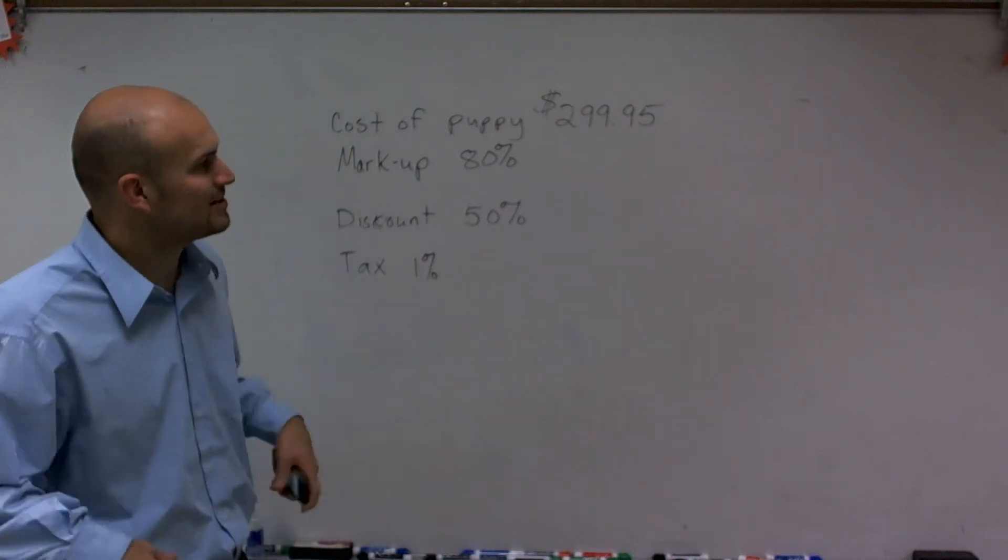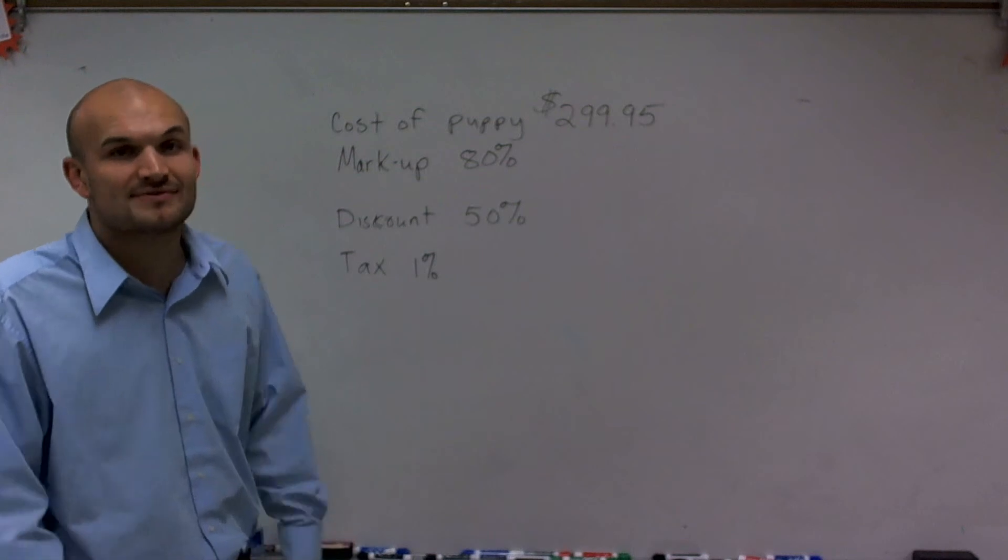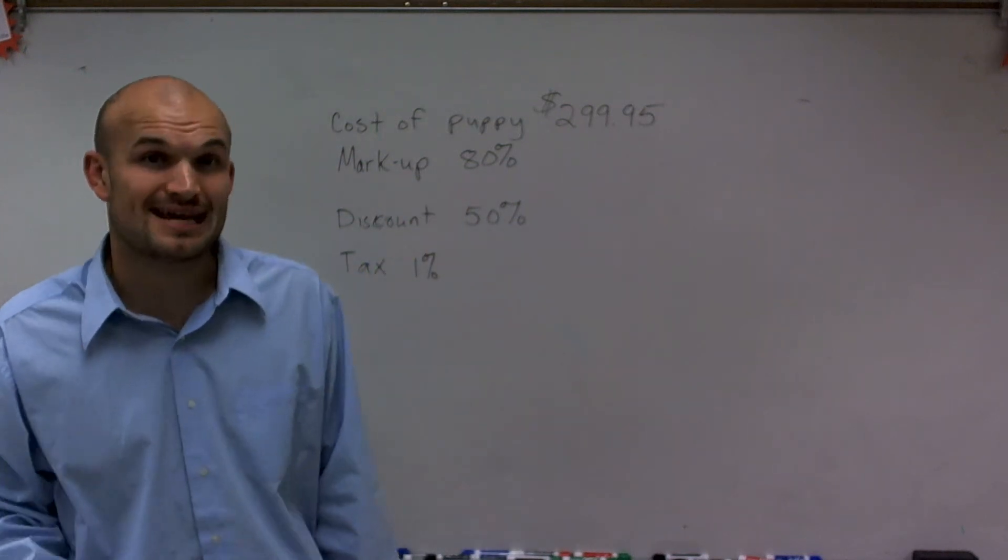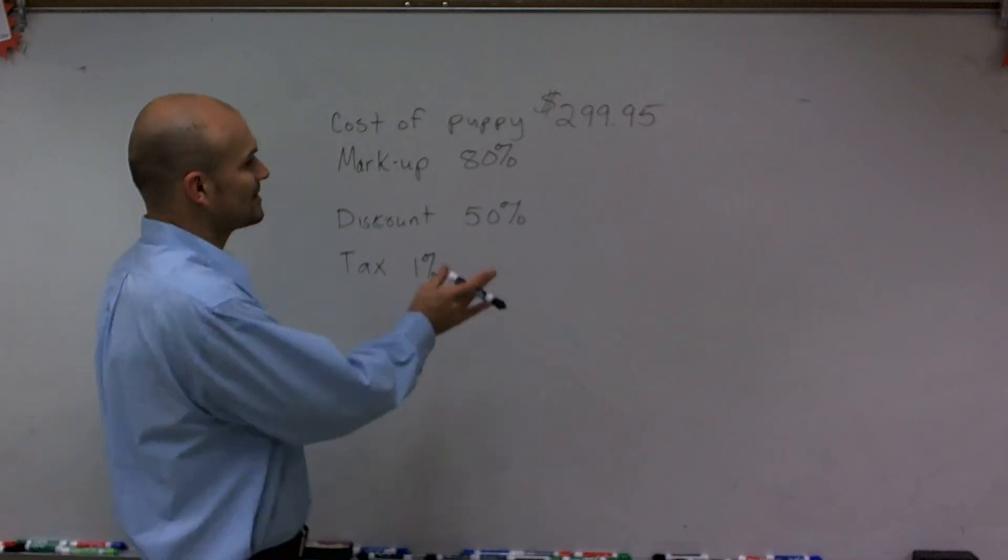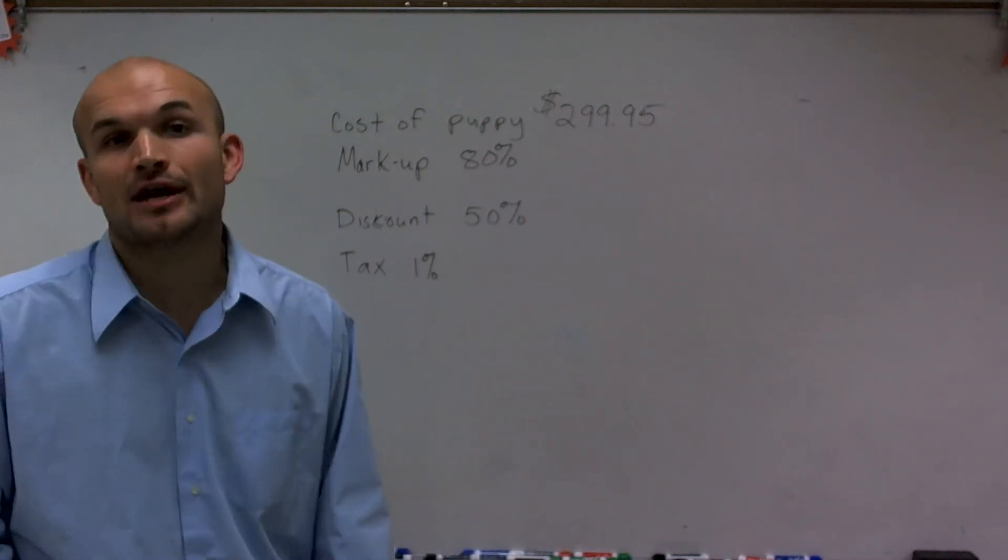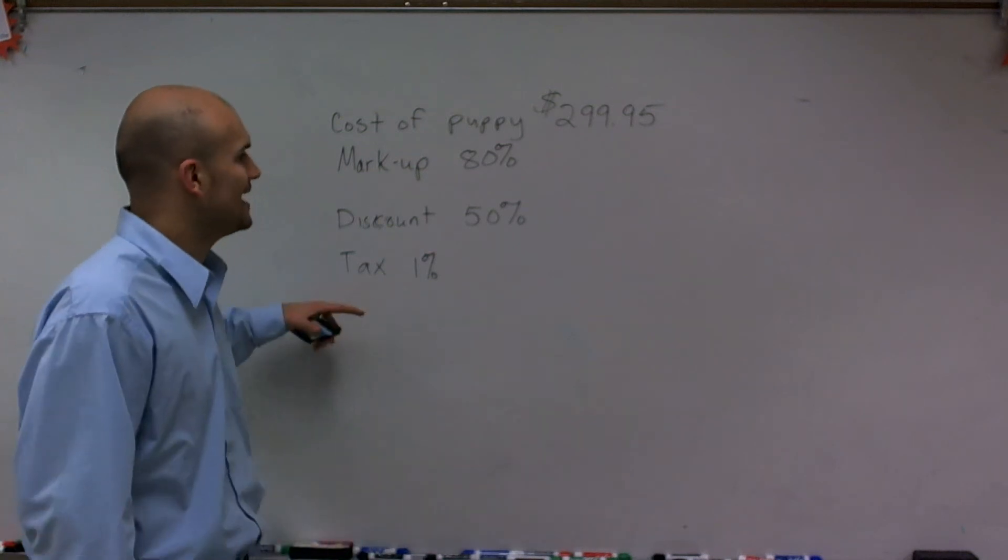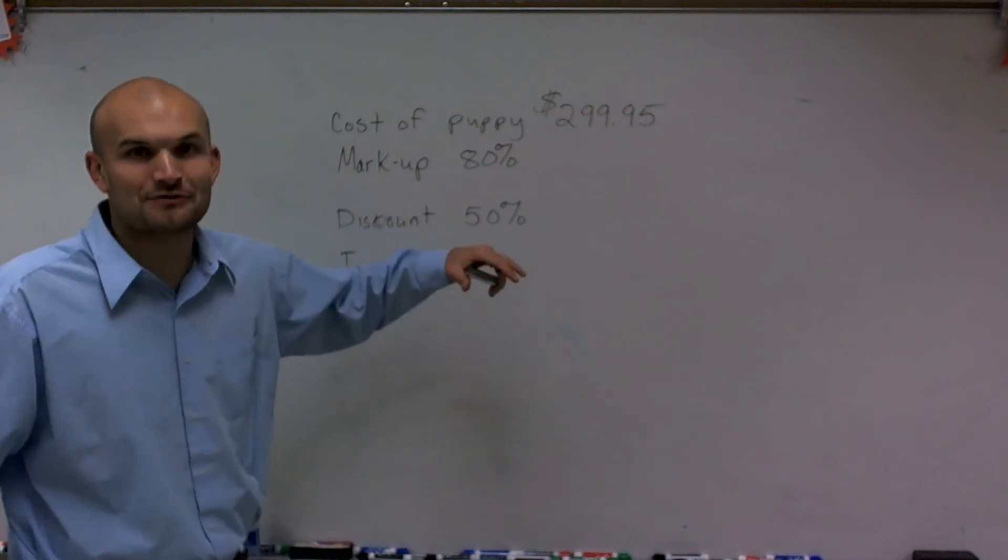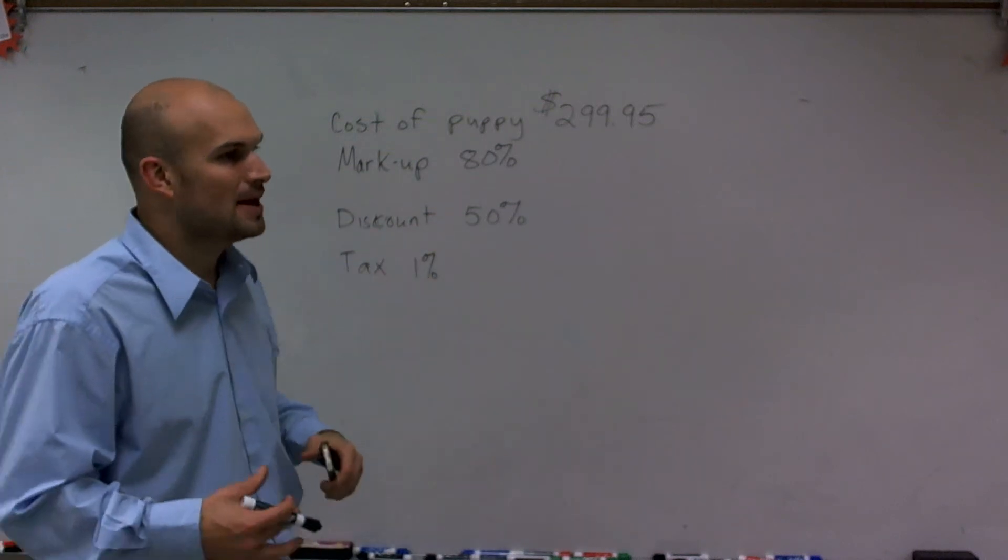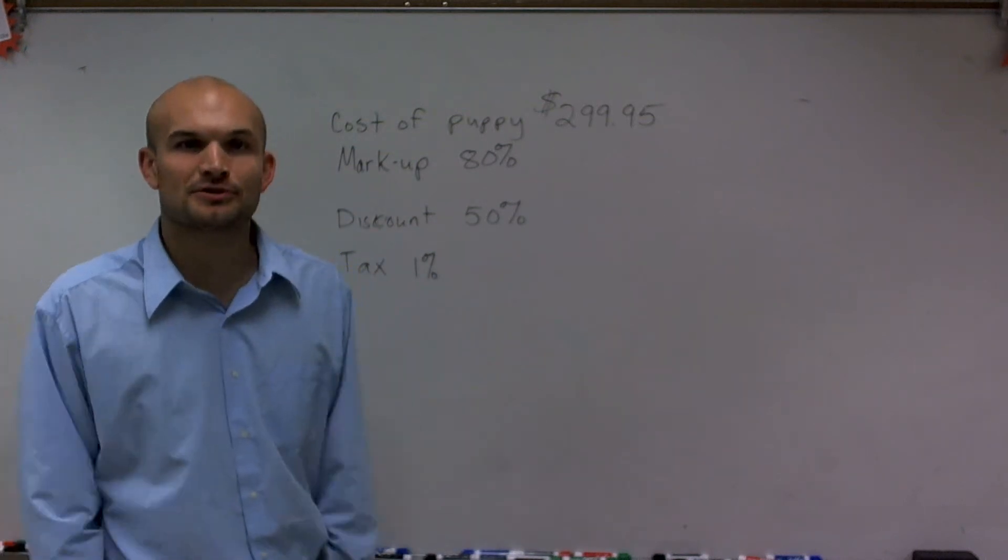So what we have is a cost of a puppy at $299.95. Then they're going to mark up that price 80%, but then we're going to have a discount of 50%, and then we've got to add a tax. What is going to be the final price of the puppy? Now, I don't really have exact dialogue to tell you why it's getting marked up and why we're having a discount, but let's just look through a scenario here.